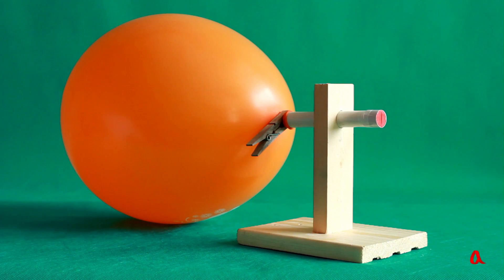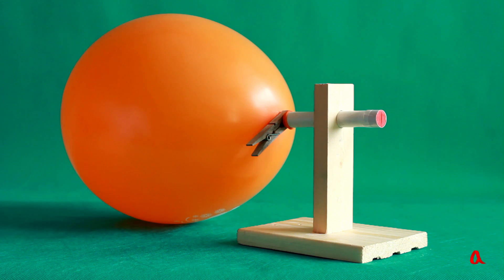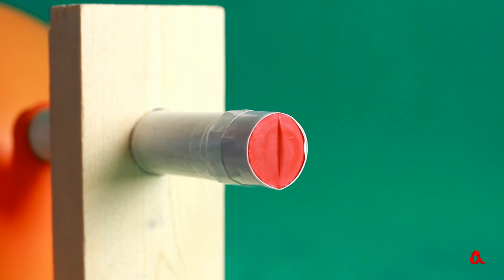We have made a vocal cords model, having pulled two rubber bands with a narrow slot between them over a tube. The inflated balloon will play the role of lungs. We remove the peg and the cords start making the sound.